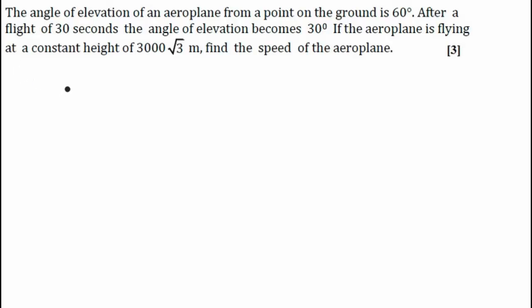This is a question on trigonometry. The angle of elevation of an aeroplane from a point on the ground is 60 degrees. After a flight of 30 seconds, the angle of elevation becomes 30 degrees. If the airplane is flying at a constant height of 3000√3 meters, find the speed of the plane.